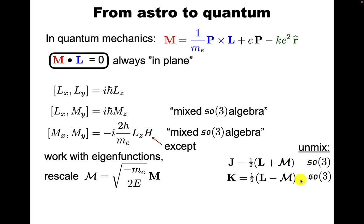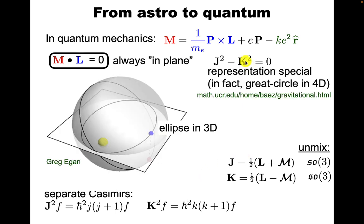With this rescaled curly M, you can form these two combinations J and K, and they are then unmixed. They each satisfy an SO3 algebra of just this type. That's nice, and it also means we have separate Casimir elements. But now we have this condition, M dot L is zero, and we can translate that to a condition on J and K. In fact the condition becomes J² minus K² equals zero. That means that the representation we're looking at here is very special.